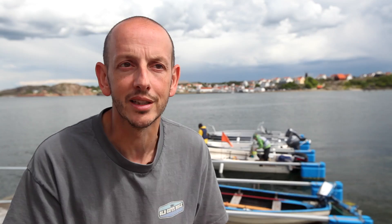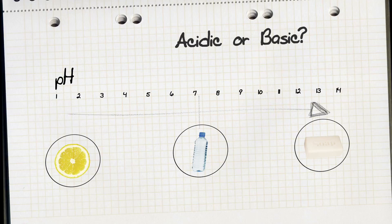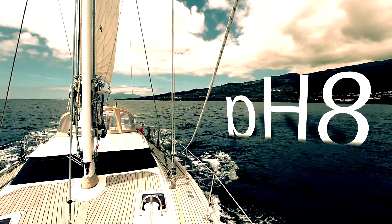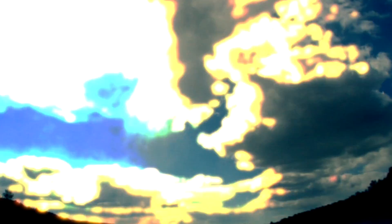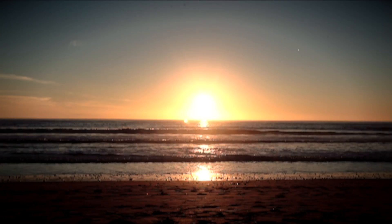To measure how acidic or basic a solution is, we use a pH scale. Drinking water has a pH of 7, which is neutral. Seawater normally has a pH around 8, which is slightly basic. Part of the gases in the air will always dissolve in water, and when carbon dioxide dissolves in water, we get carbonic acid. With more carbon dioxide in the atmosphere, we will have more carbon dioxide dissolving in the water, and therefore more carbonic acid forming, resulting in a lower pH in the ocean.